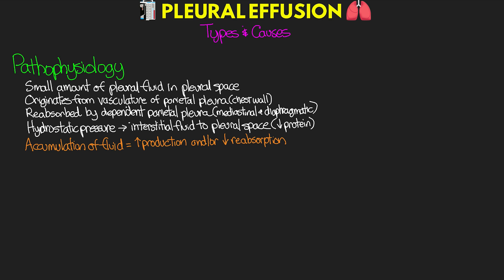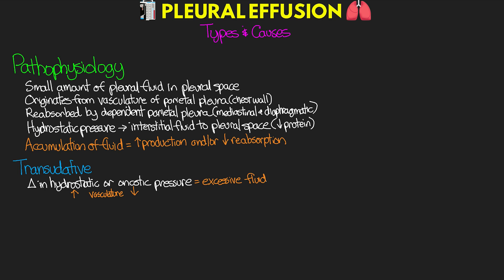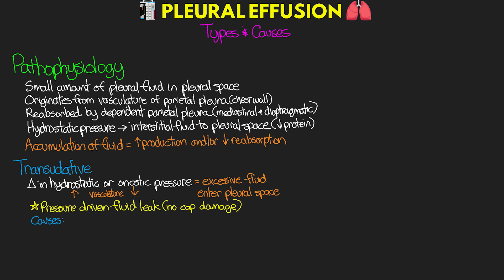One way of classifying pleural effusions by pathophysiology is transudative. This results from changes in either hydrostatic or oncotic pressure — increased hydrostatic pressure inside the vasculature or decreased oncotic pressure — both causing excessive fluid to enter the pleural space. Think of this as a pressure-driven fluid leak without any capillary damage. Common causes of transudative pleural effusion include congestive heart failure, cirrhosis, severe hypoalbuminemia, nephrotic syndrome, acute atelectasis, myxedema, and potentially peritoneal dialysis.